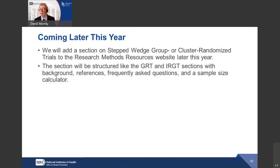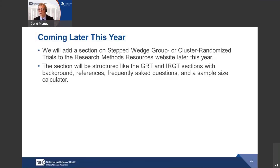The Research Methods Resources website is freely available — it's an NIH website. If you go to the NIH website and search for Research Methods Resources, you'll find it. Slides will be sent out in about a week. The site does not support observational studies; it supports trials.